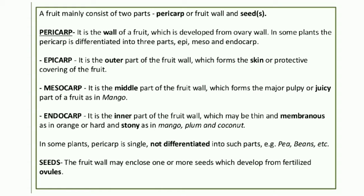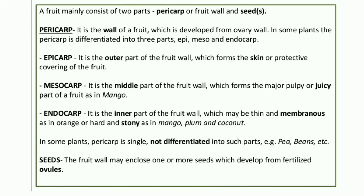Mesocarp is the middle part of the fruit wall which forms the major pulpy or juicy part of the fruit. As in mango, whatever we eat — the edible part of the mango is mesocarp. Endocarp is the inner part of the fruit wall, which may be thin and membranous as in orange, or hard and stony as in mango, palm and coconut. After eating the mango, we throw out the hard part — that hard part is called endocarp.